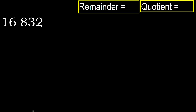832 divided by 16. 8 is less, therefore next. 83. 83 is not less, therefore with 83, 16 multiplied by which number is nearest to?